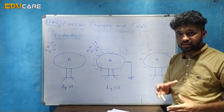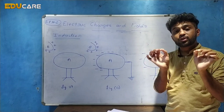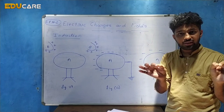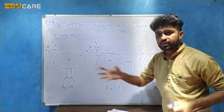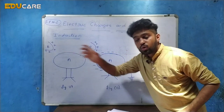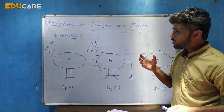Remember the property: like charges repel and unlike charges attract. If there are two positive charges, they repel. Similarly, two negative charges repel. But if one is positive and another is negative, they attract. Now, there is a body A which is a conductor and it is a neutral body. We know that a neutral body has equal numbers of positive and negative charges. We are bringing another body B, which is positively charged.